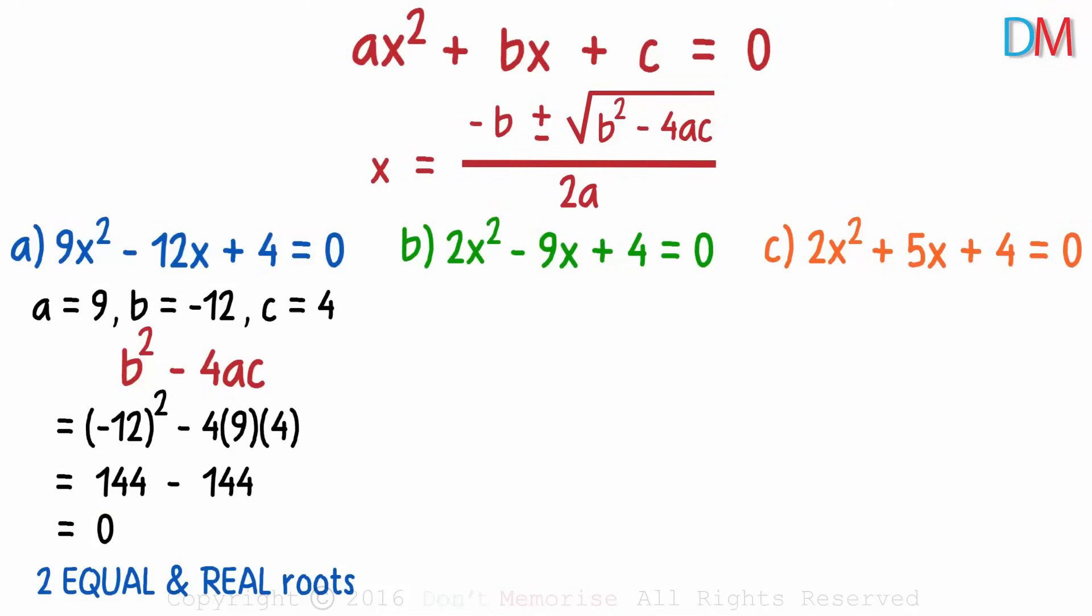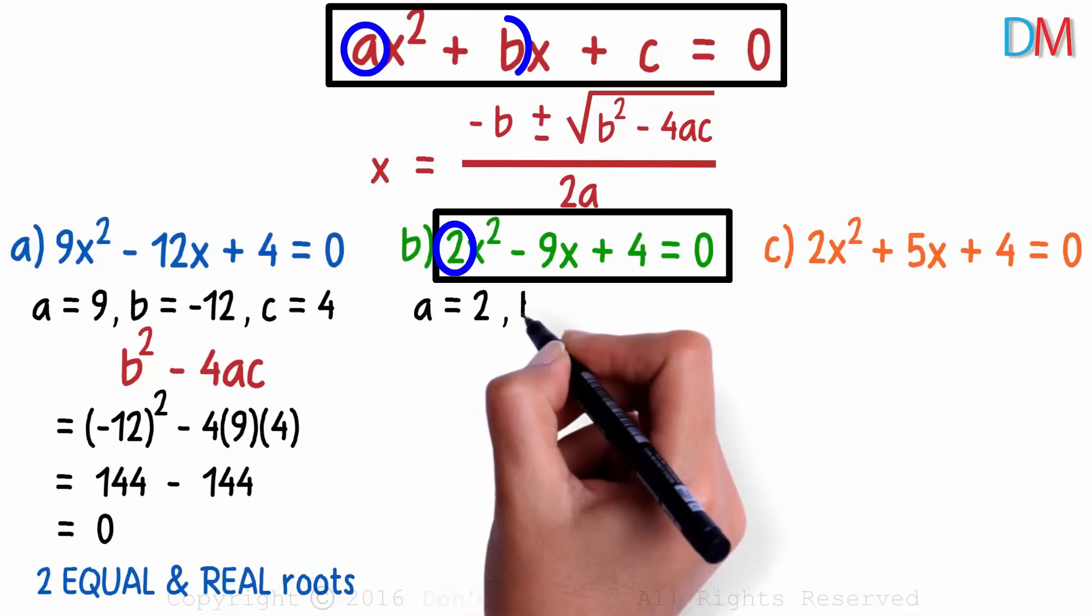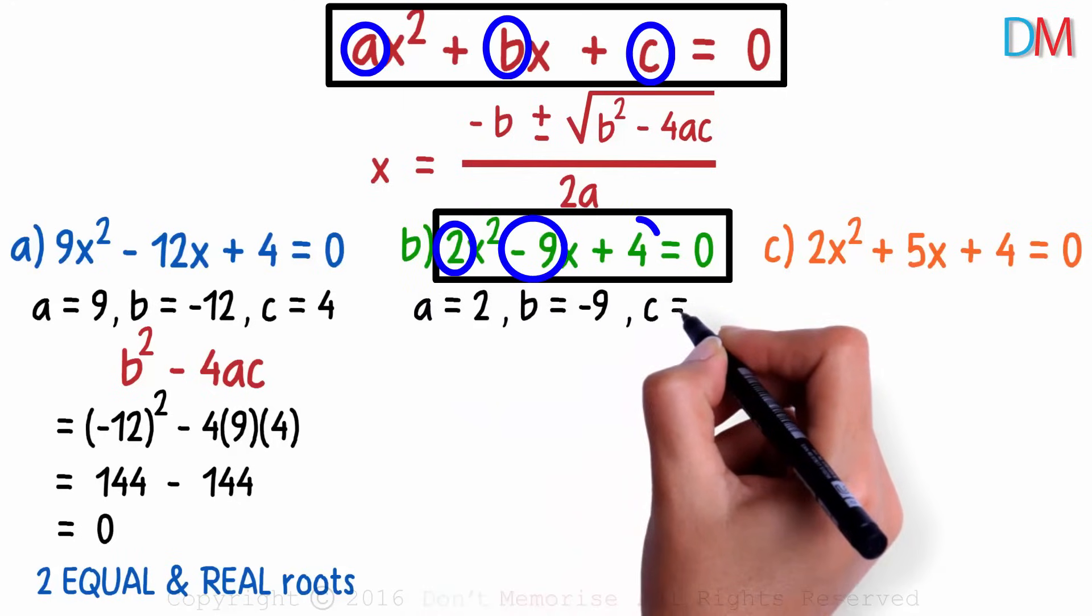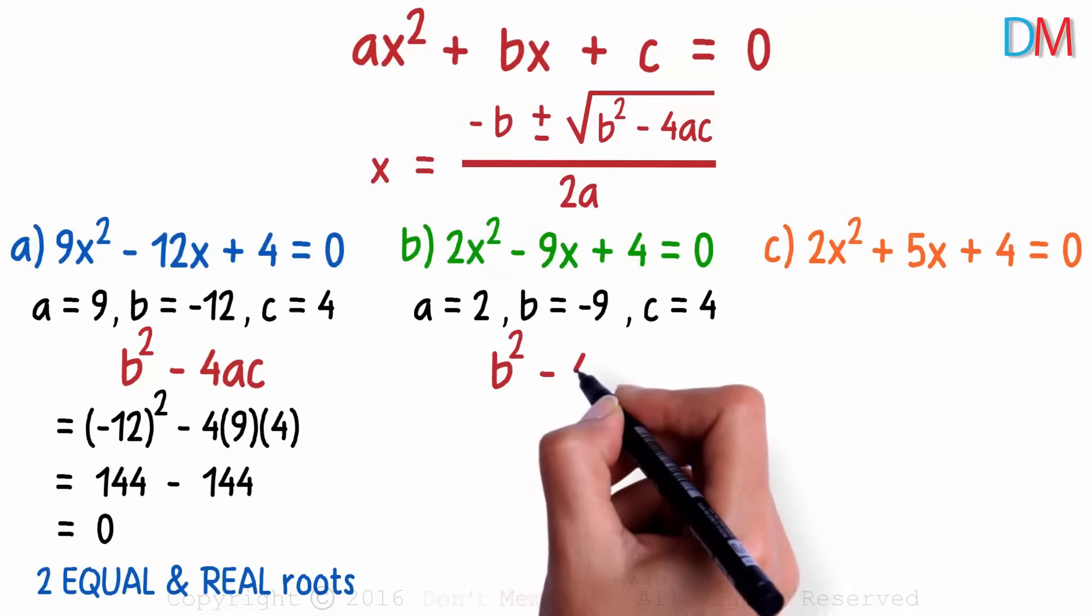Now I want you to try finding the nature of the roots of the second question. Comparing the second equation with the general form, we get the value of a as 2, b as negative 9 and c as 4. What will be the value of b squared minus 4ac then?